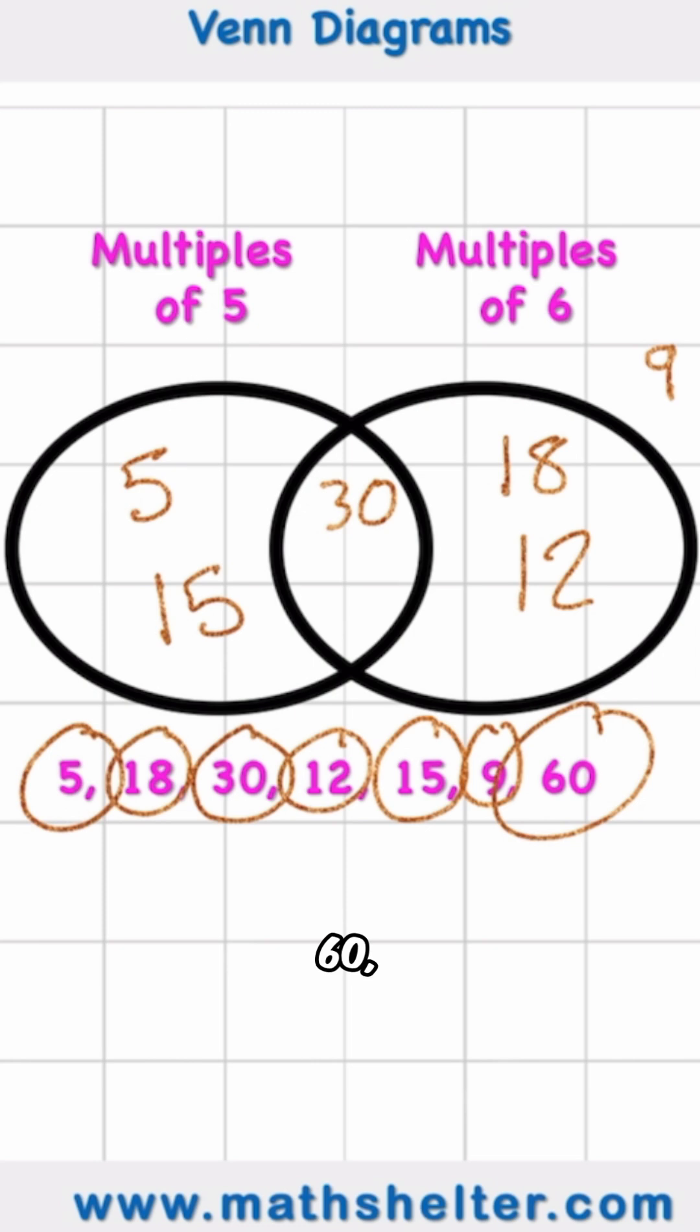Then I have finally 60, which is both a multiple of 5 and a multiple of 6. And there you go, that is a Venn diagram. It's super simple.